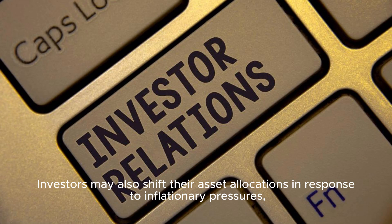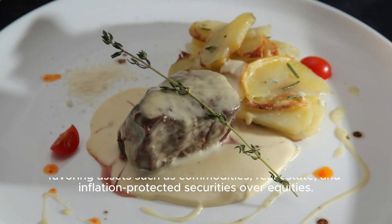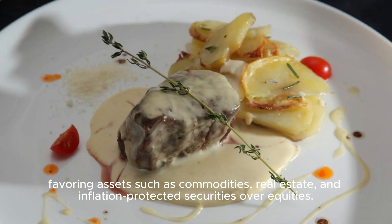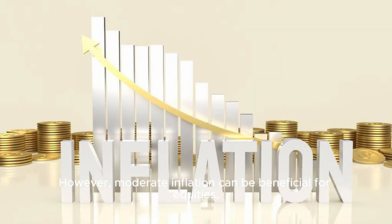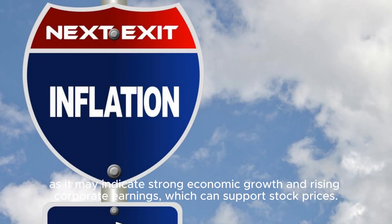Investors may also shift their asset allocations in response to inflationary pressures, favoring assets such as commodities, real estate, and inflation-protected securities over equities. However, moderate inflation can be beneficial for equities, as it may indicate strong economic growth and rising corporate earnings, which can support stock prices.